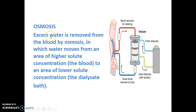The second principle is osmosis. Excess water is removed from the blood by osmosis, in which water moves from an area of higher solute concentration — the blood — to an area of lower solute concentration in the dialyzer. In patient blood the solute concentration is higher compared to the dialyzer, where the concentration is lower. So water moves from the patient blood to the dialyzer by the principle of osmosis.